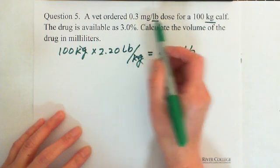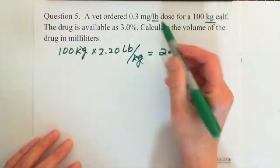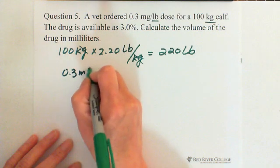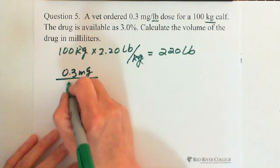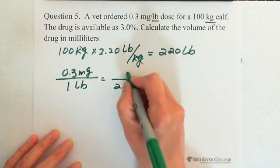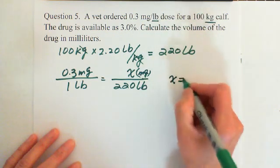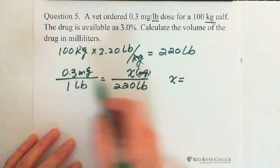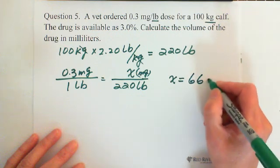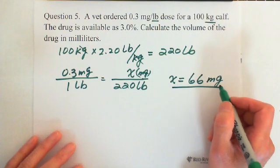For each pound of body weight, we need 0.3 milligrams of medicine. We can set up a ratio: 0.3 milligrams per pound, and we have 220 pounds — how many milligrams do we need? Cross-multiplying, x equals 0.3 multiplied by 220, which is 66 milligrams. So the calf needs 66 milligrams of medicine in total.